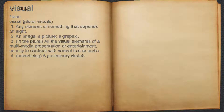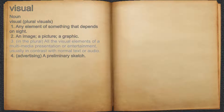Visual. Noun. 1. Any element of something that depends on sight. 2. An image, a picture, a graphic. 3. In the plural, all the visual elements of a multimedia presentation or entertainment, usually in contrast with normal text or audio.